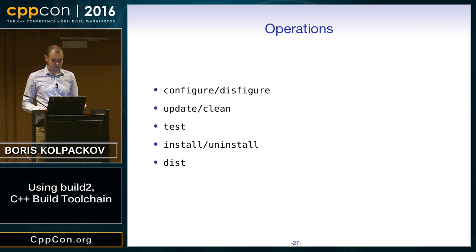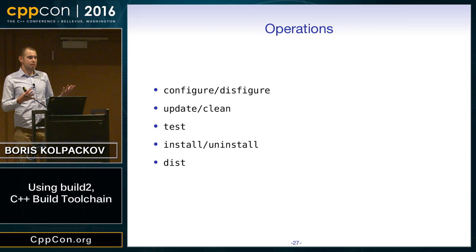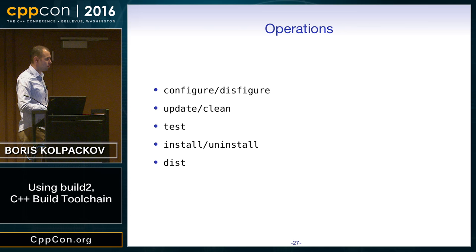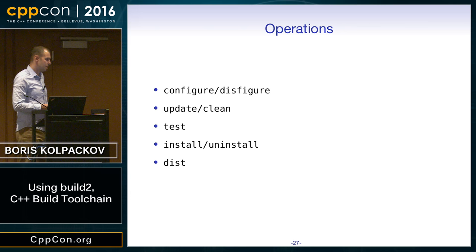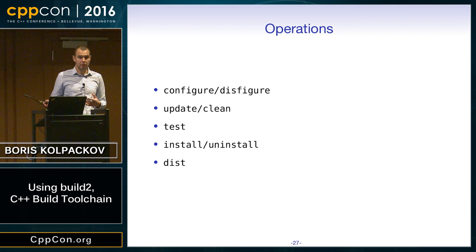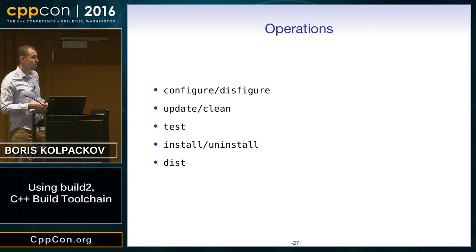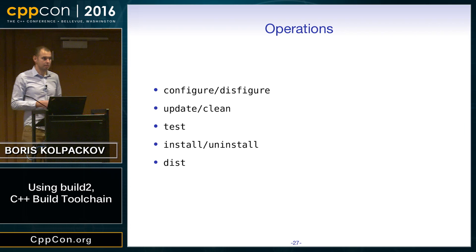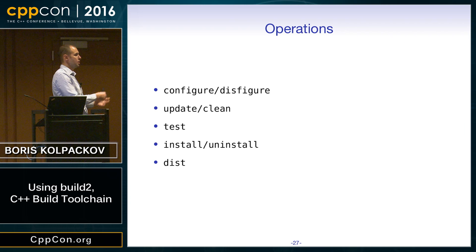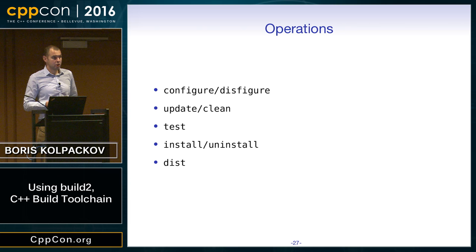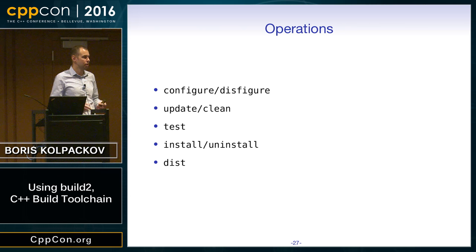Besides standard update and clean operations, there are other operations the build system has to handle. Configuration is one — some build systems say it's a separate step, but you gain a lot by integrating the two. Tests: in Build2 we have a test module that provides interesting support, including specifying an output file to compare your execution output against and showing you the differences with diff. We're planning to extend it significantly. The dist operation handles preparation of distributions: creating a clean package without git ignore files and other garbage. It's fairly easy to do in Build2 — much easier than in automake.